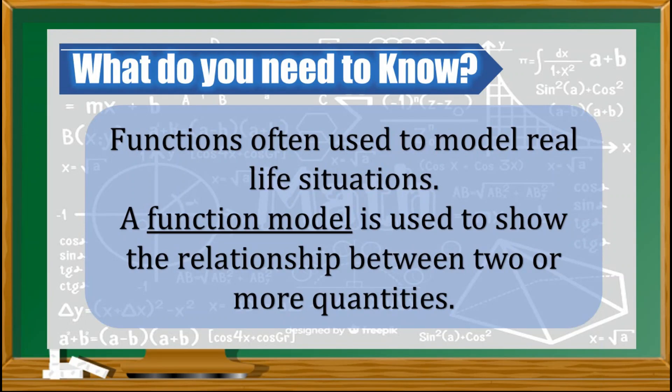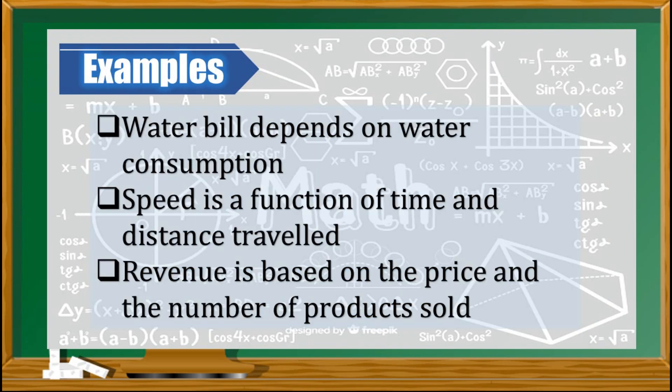Functions are often used to model real life situations. A function model is used to show the relationship between two or more quantities. In everyday life, many quantities depend on one or more variables. For example: water bill depends on water consumption, speed is a function of time and distance traveled, and revenue is based on the price and number of products sold.